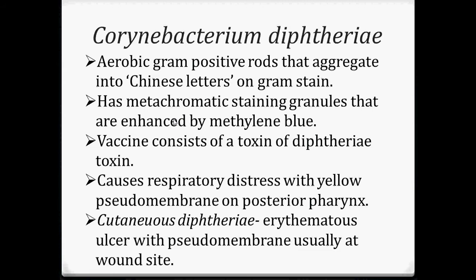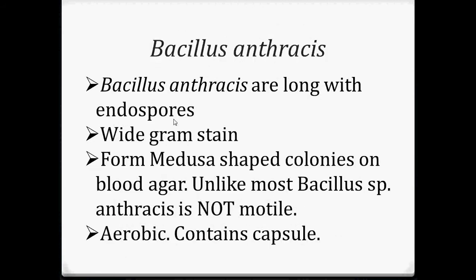Diphtheria toxin causes respiratory distress with a yellow pseudomembrane on the posterior pharynx. Cutaneous diphtheria results in an erythematous ulcer with pseudomembrane, usually at the wound site.